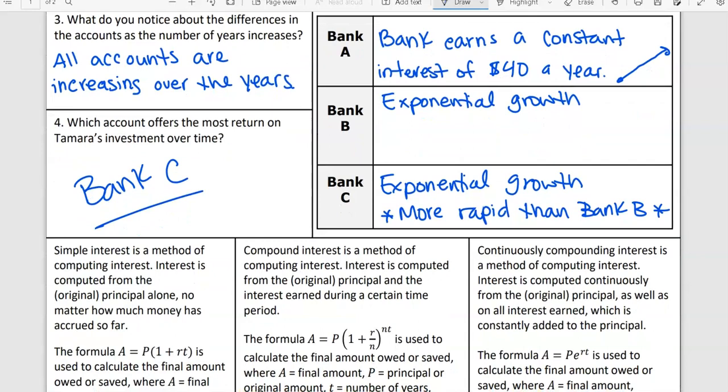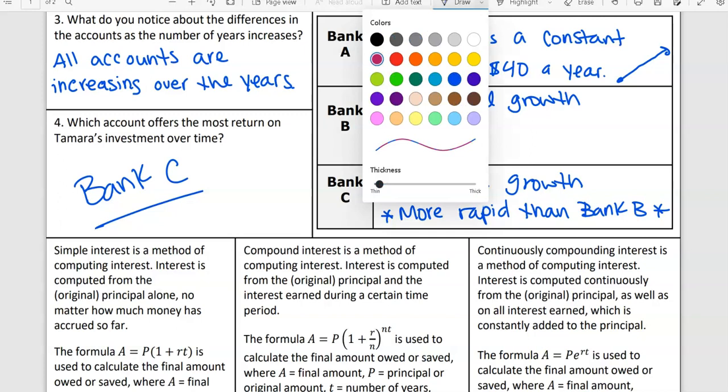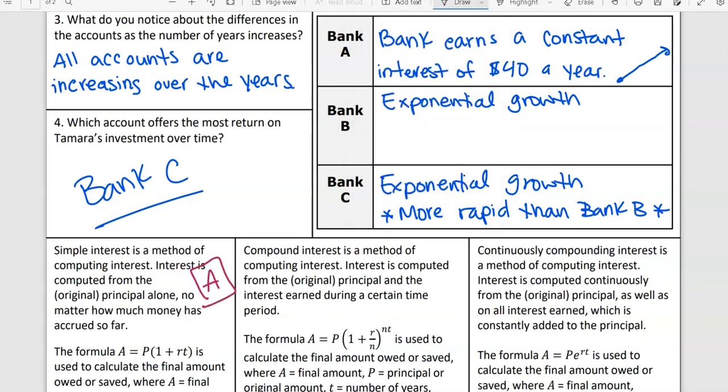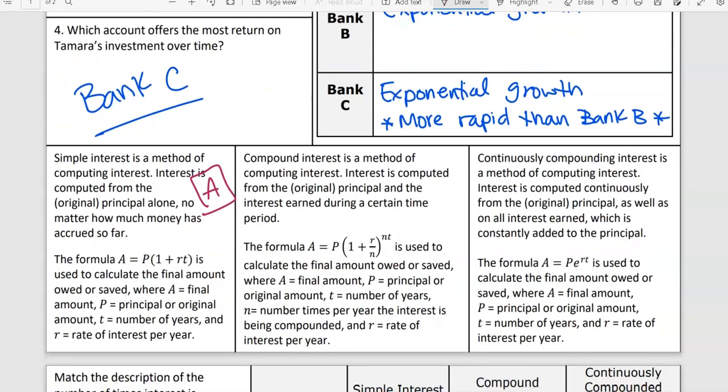Each one of these is a different example of the different kinds of interest. Our very first one, bank A, was an example of simple interest happening. Simple interest is a method of computing interest from the original principle alone, no matter how much the money has accrued so far. The formula A equals P times 1 plus RT is used to calculate the final amount owed or saved, where A is the final amount, P is the principle or what you started off with, T is the number of years, and R is the interest rate. This is when it was just a line. There's a constant rate of change, it's the same exact thing every single time.